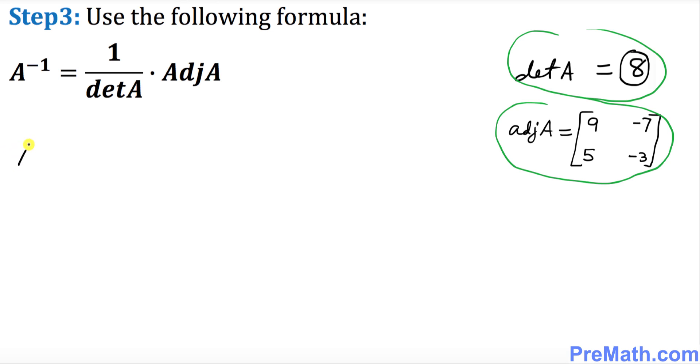So our A inverse is going to be simply equal to one over eight times the adjoint matrix, which is nine, negative seven, five, and negative three. Now since this one over eight is multiplying this matrix, let's go ahead and multiply this one eighth with each and every element of this matrix.